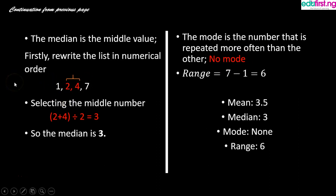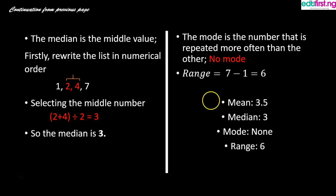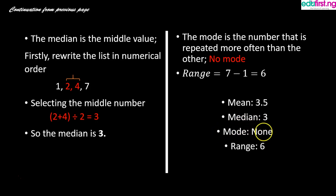The mode is the number that appears more often than the others. Looking at our data, all numbers appear only once, so there is no mode in this data set. The range: our lowest value is 1 and the highest is 7; subtracting gives us 7 minus 1 equals 6. In summary for example two: mean is 3.5, median is 3 (found by adding the two middle numbers and dividing by 2), no mode, and range is 6.